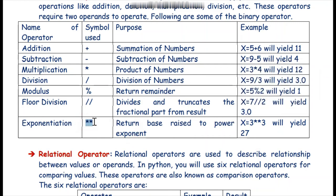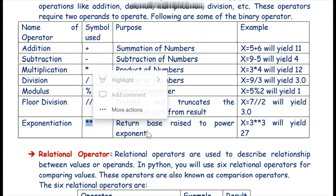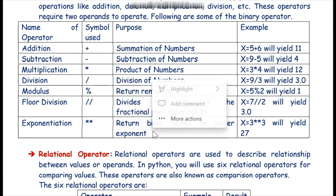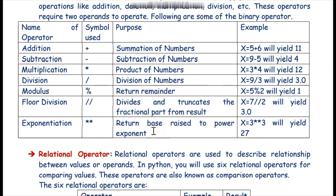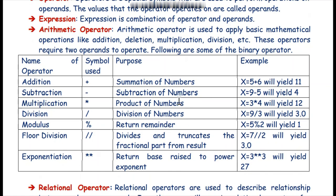The next arithmetic operator is the exponential operator. Exponent means when we create a to the power b or x to the power y. Then we are using exponential operators. For example, x = 3 exponential operator 3, using two stars, will give you the result 27. So this is all about the arithmetic operators. I hope you will enjoy this.